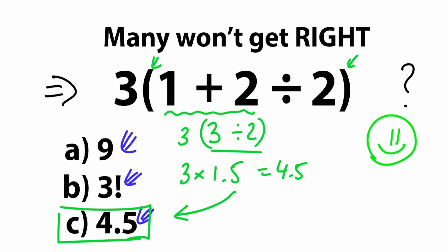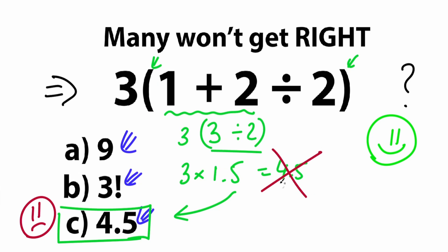But I want to say one really important thing. If you chose option C and said 4.5 is the correct answer, you should review your basic math. You need to know about the thing called order of operation. Because 4.5 is absolutely the wrong answer — just forget about this random method.